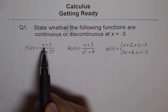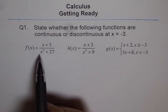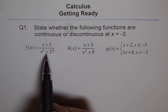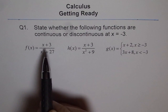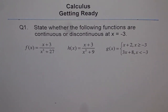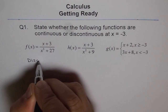If I put x equals minus 3, I get 0 in the numerator — that's fine, a function could be 0. But if I plug in x equals minus 3 in the denominator, minus 3 cubed is minus 27, and minus 27 plus 27 gives me 0. So I get 0 in the denominator as well. If 0 is in the denominator, that makes no sense, and that shows this is a discontinuous function.